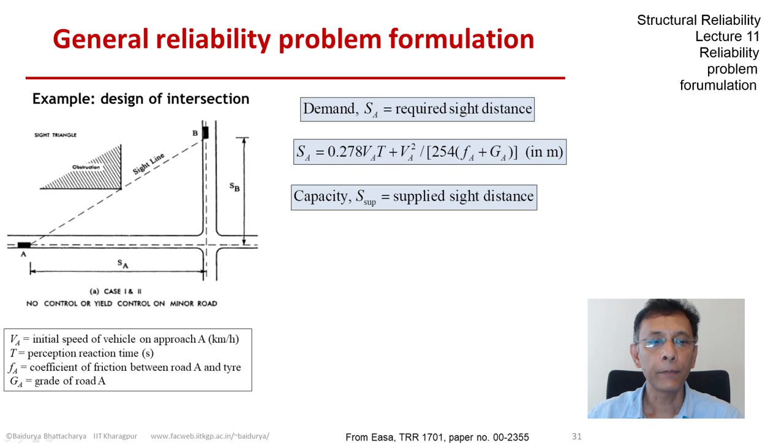Now, the capacity side of this problem is the supplied sight distance. That is what may be provided, that may be changed by the engineer, and we can undertake a reliability analysis to make sure that the probability of collision is sufficiently low.